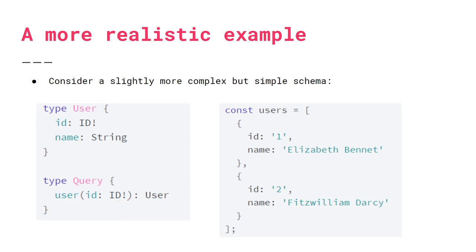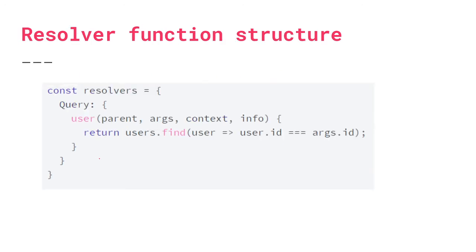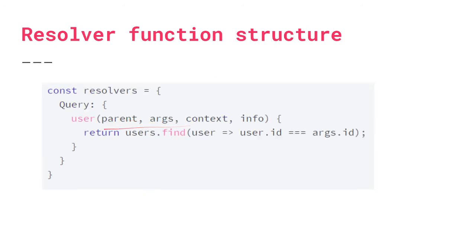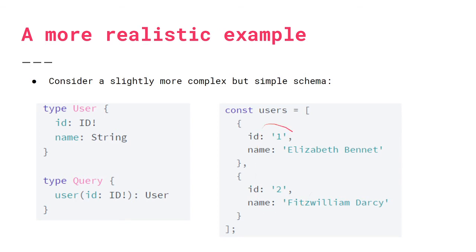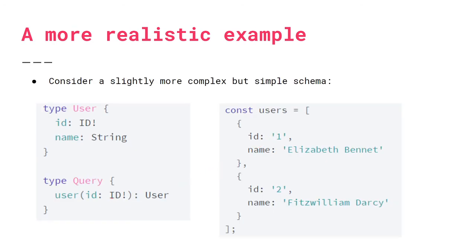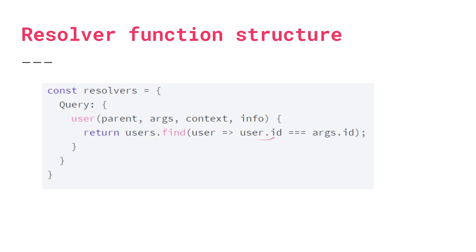Let's say a client calls this and says: I want the user with this ID and I only want the name back. How does Apollo Server get that? That's where we define a resolver. In your resolver map you define the type — Query — and then the field with the same name. The resolver function loops through the list and finds the user object with the matching user ID. In a real database example you'd write a query instead of looping through a list.